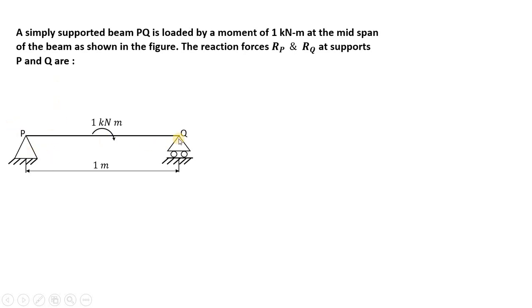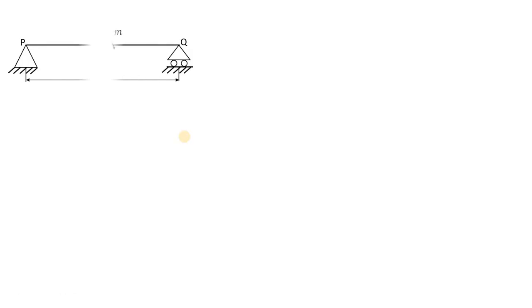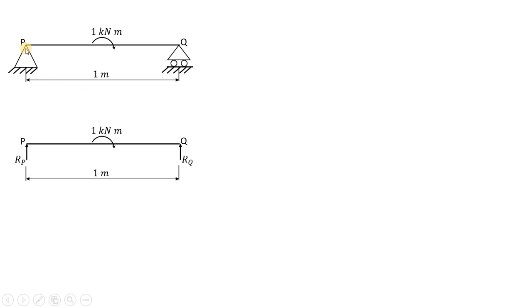Let us draw the free body diagram. At point P, the reaction assumed is RP, acting in the upward direction. At point Q, which is also a roller support, the reaction RQ is also assumed acting in the upward direction. The span length is 1 meter and there is a clockwise moment of 1 kilonewton meter acting at the mid-span.